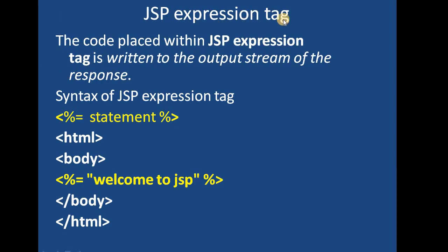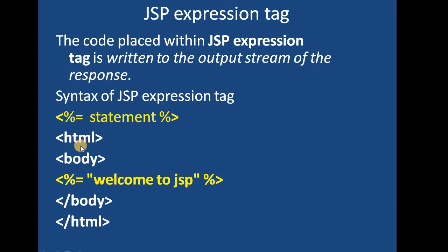The next component is the expression tag. Code placed within a JSP expression tag is written to the output stream of the response — basically sent to the output. The syntax uses the equal-to symbol with the opening tag, then the statement we want to print or send to the response's output stream. For example, a simple expression tag with 'Welcome to JSP' will be printed on the user's web page.